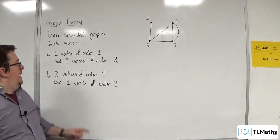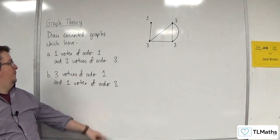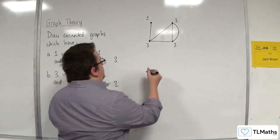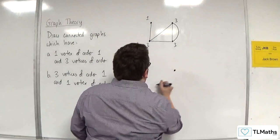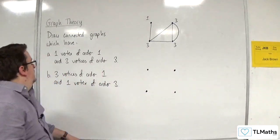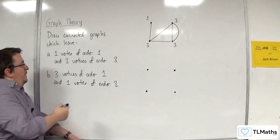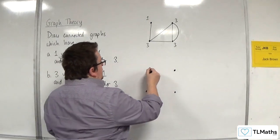Right. B, three vertices of order 1 and one vertex of order 3. So we have four vertices again. Now we've got one vertex of order 3. So let's deal with that one first.